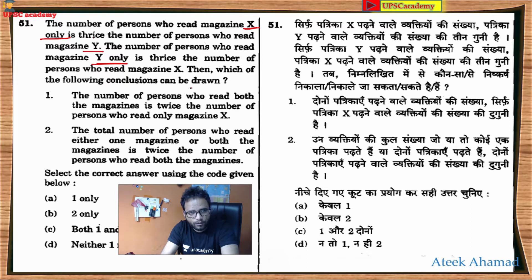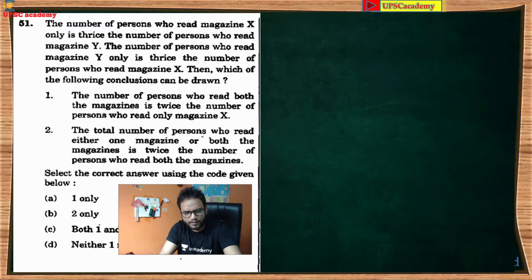Then which of the following conclusions can be drawn? The number of persons who read both magazines is twice the number of persons who read only magazine X. The number of persons who read either one magazine or both magazines is twice the number of persons who read both magazines. Dekhiye pehle hum statement ko dhyaan se samajhte hai.